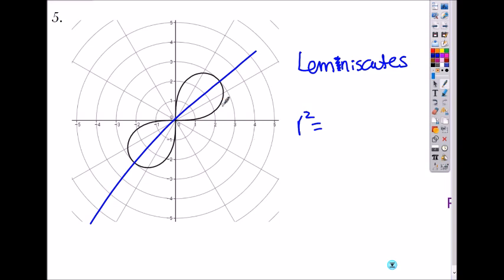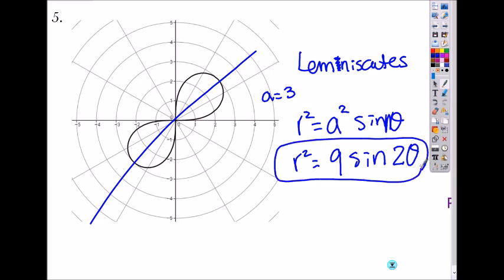So a is three. The equation is a squared sine of theta, right? And n theta. So for this case, it will be r squared equals to nine sine of two theta. For lemniscates, if n is even, you have even number of petals. If n is odd, then you have odd times two number of petals.